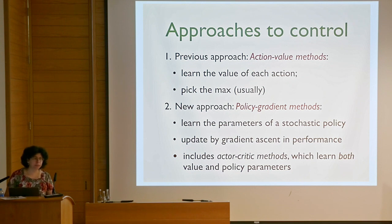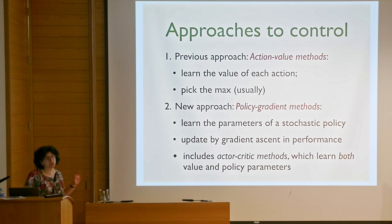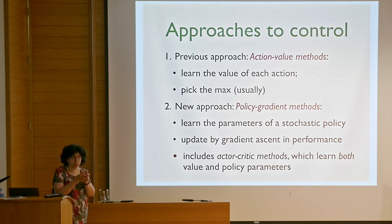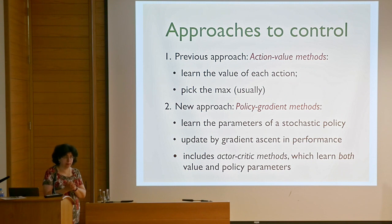Now I want to show you another kind of reinforcement learning called policy gradient. The kinds of approaches we've discussed so far are all based on estimating values—specifically, in the control case, we estimate action values and build policies from them. The thing we parameterize is the action value function. But there are cases where you don't want to parameterize the value function and instead parameterize the policy directly.